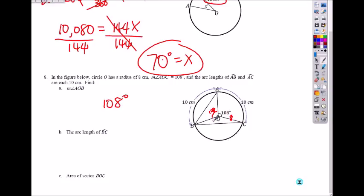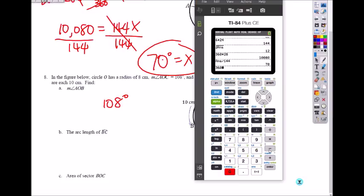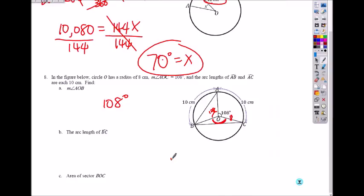Which will be 360 minus 108 minus 108, because the whole circle is 360. So that's 144 degrees.